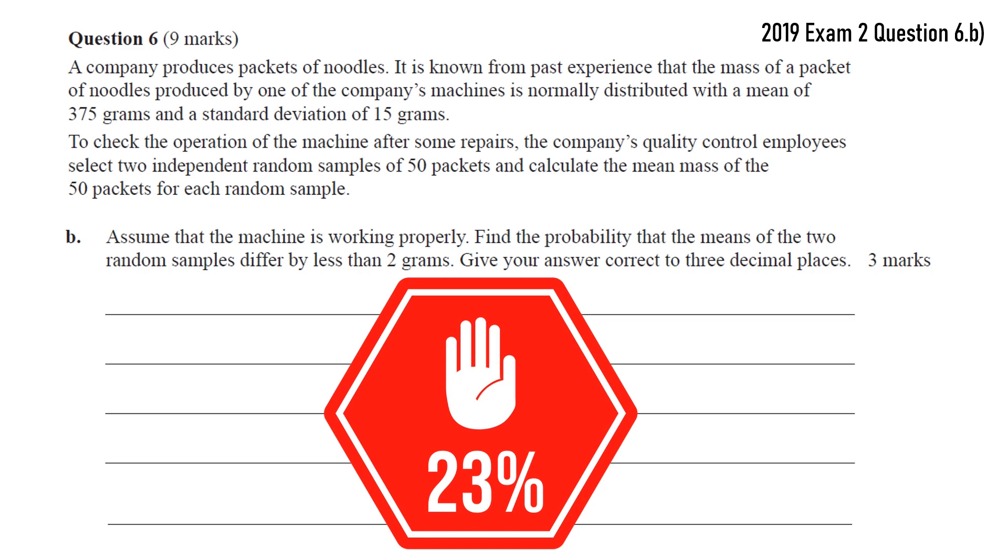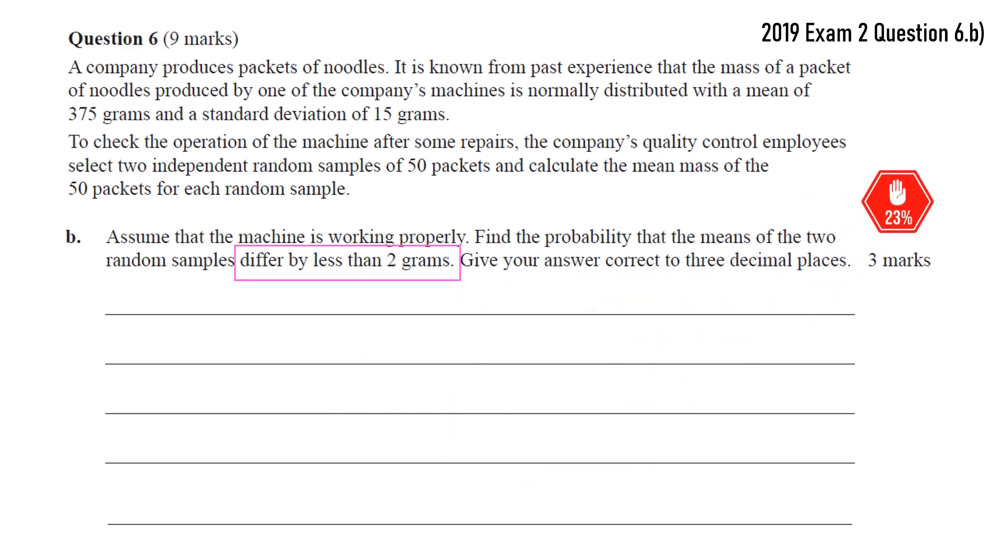So it's asking the probability that the means of the two random samples differ by less than 2 grams. So we want to find the probability that the absolute value of a minus b is less than 2. We need an absolute value because a could be greater than b, b could be greater than a, but the difference in absolute value just needs to be less than 2. So if we set up a random variable for a minus b, if we find the probability that that random variable is between negative 2 and 2, then that would give us the probability that the difference is less than 2. So we need a probability distribution for our difference. So we need to go back to the variables a and b, which are random samples.